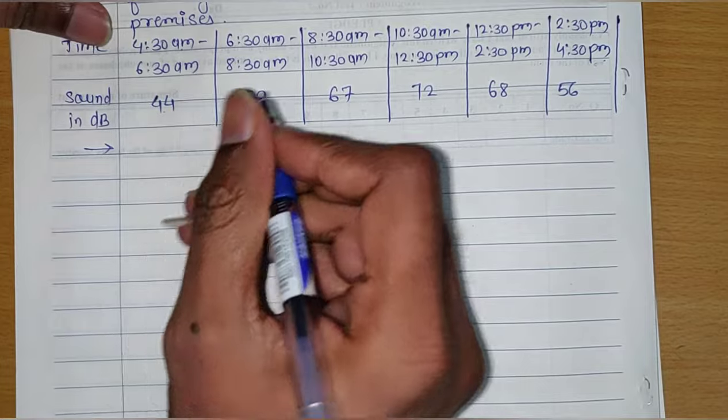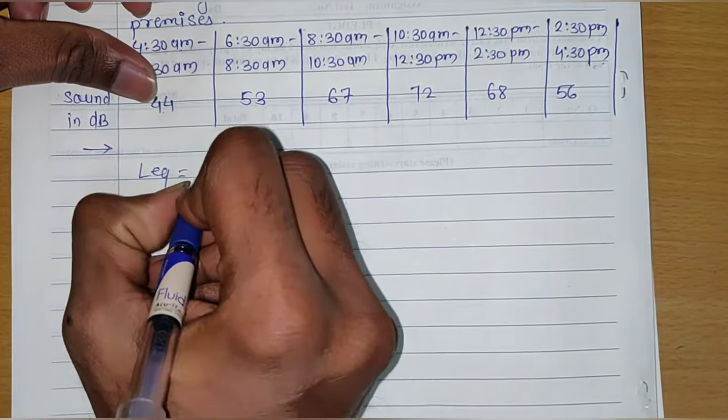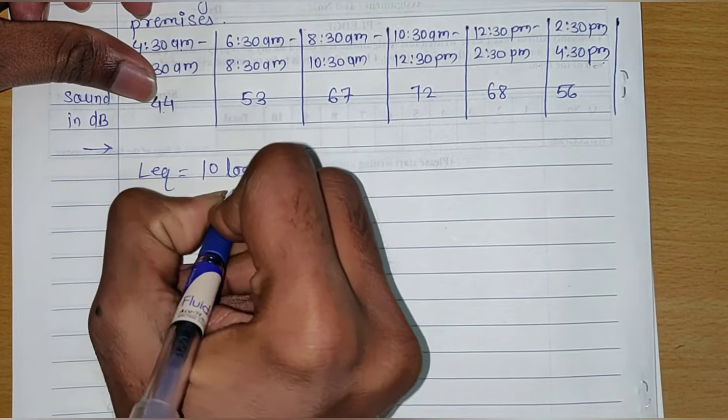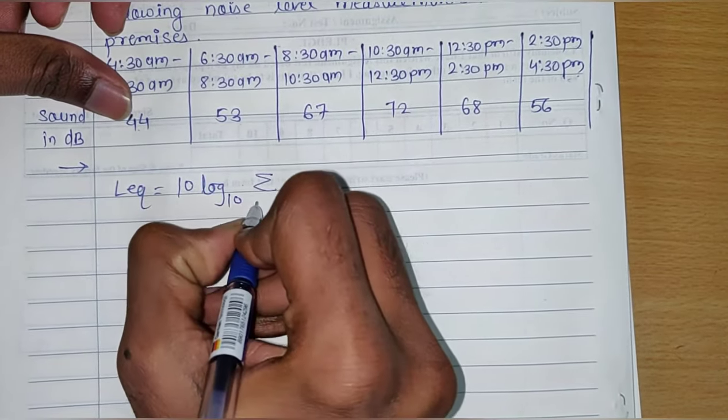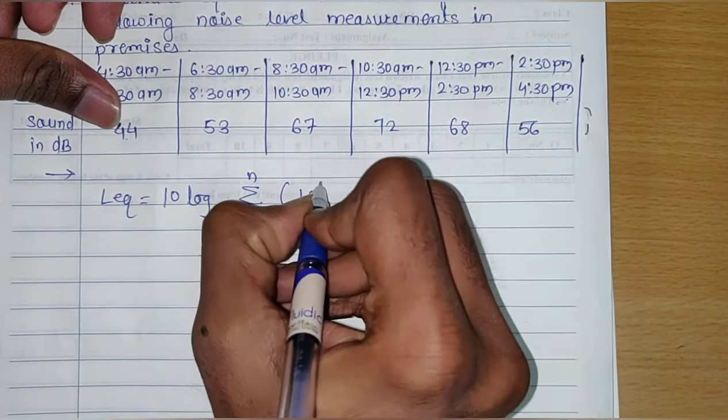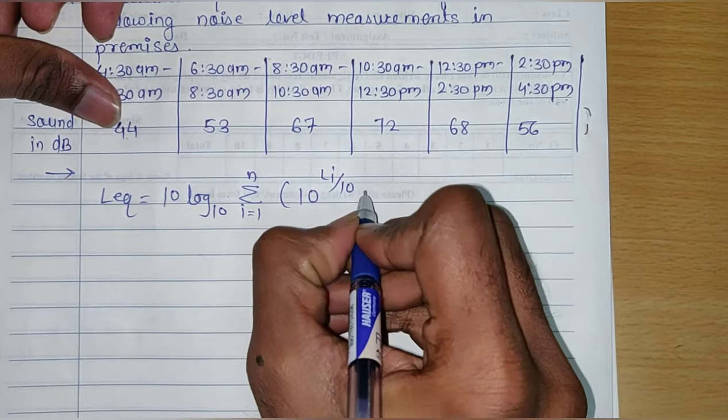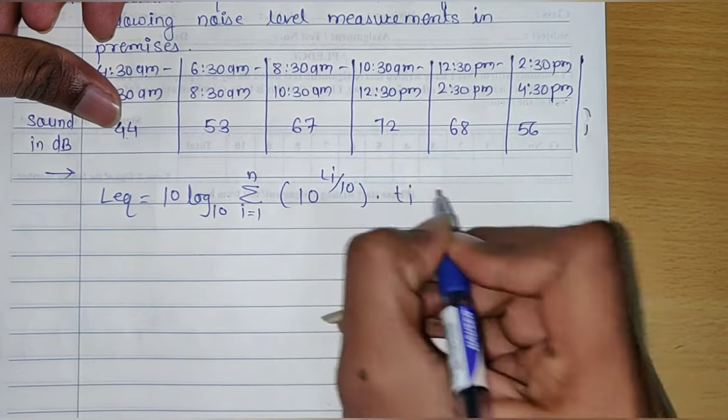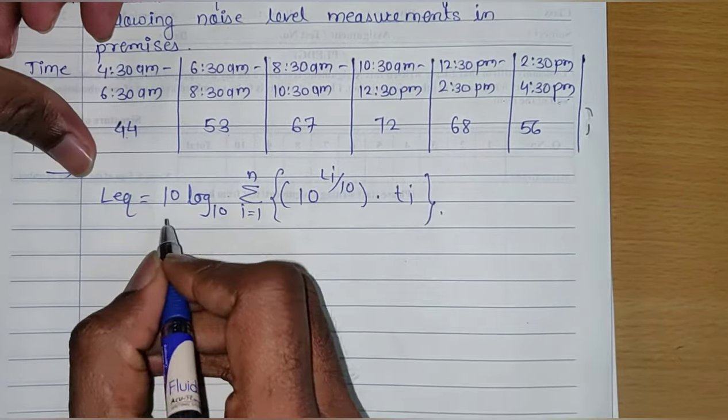Equivalent noise level L_equivalent is given by 10 log base 10 of summation from i equals 1 to n in bracket: 10 raised to the power L_i by 10 multiplied by t_i.